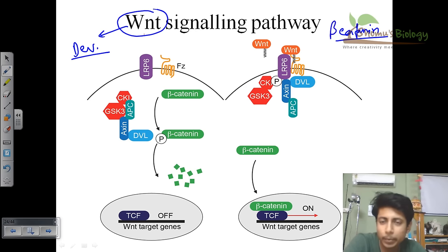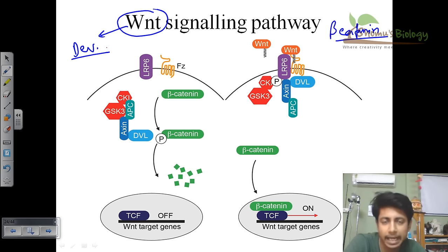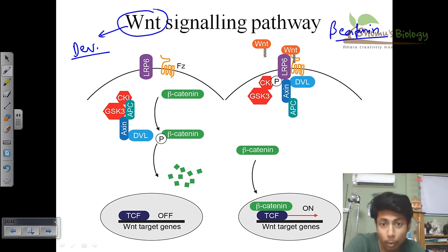The WNT signaling pathway is a very important signaling pathway during the development of our organs, especially the heart, and also for the development of cells and other metabolic functions of cells. WNT pathway deals with beta-catenin at the core — like any other pathway, there should be a core molecule inside the cell.